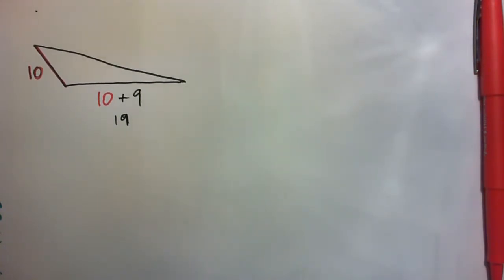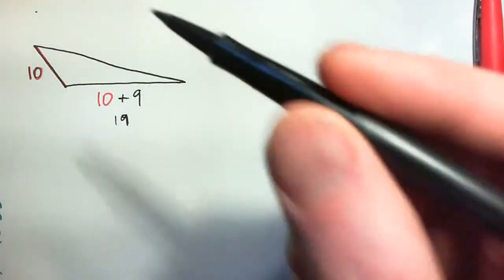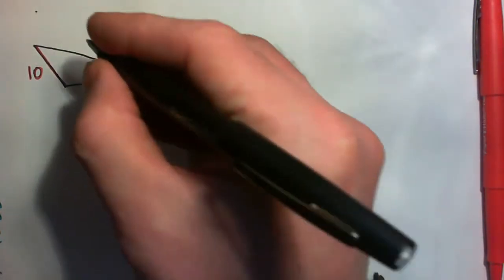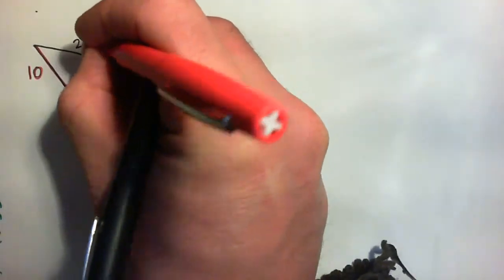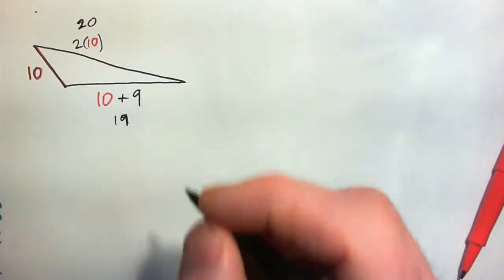And do the other one. The other side is six meters more than twice the shortest. So what's six more than twice 10? Why not do twice 10? What's twice 10? That's 20, isn't it? What's six more than twice 10?